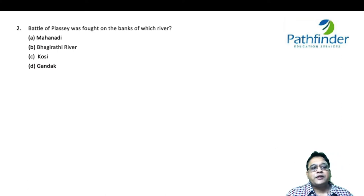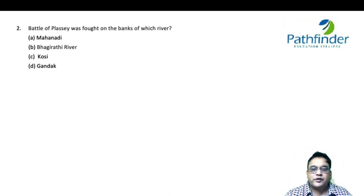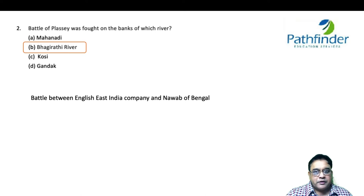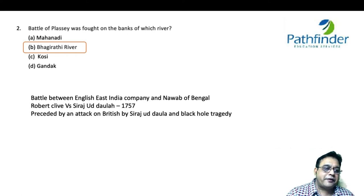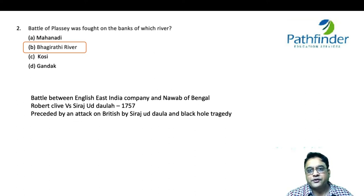The Battle of Plassey was fought on the banks of which river? The options are Mahanadi, Bhagirathi, Kosi, and Gandak. The correct answer is Bhagirathi. The Battle of Plassey was fought between the Nawab of Bengal, Sirajud-Daula, and Robert Clive. This was the battle between the East India Company and the Nawab of Bengal, after which the East India Company got solid control of India, especially Bengal. It was fought in 1757 and preceded by the Black Hole tragedy, in which British soldiers were cramped into a prison without ventilation.